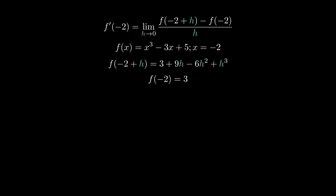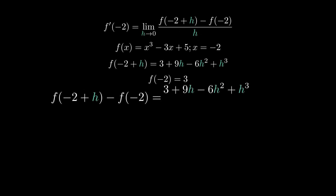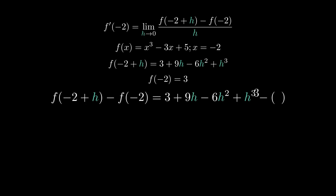Now that we have f of negative 2 plus h and f of negative 2, we can evaluate f of negative 2 plus h minus f of negative 2. When we do that, that'll give us 3 plus 9h minus 6h squared plus h cubed — because that's what we found f of negative 2 plus h to be — and then minus f of negative 2, which is 3. Combining like terms, 3 minus 3 cancels out, and that leaves us with 9h minus 6h squared plus h cubed.